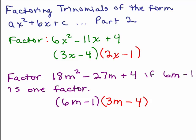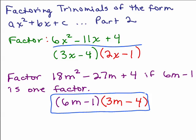And then let's check and make sure this really is the correct factorization. You've already checked the first and last term. Let's do the outer and inner. We have negative 24m and negative 3m is negative 27m. So, this is the correct factorization of this one.